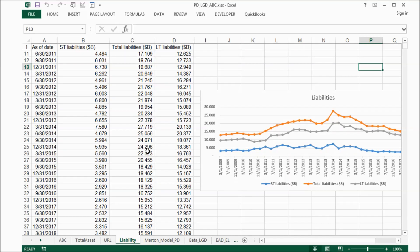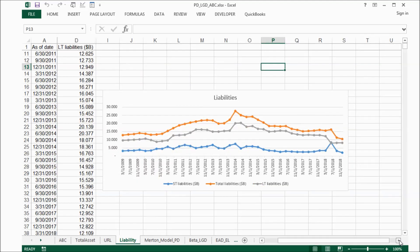For the liability of this company, I put short-term liability here and the long-term liability here. If we check the graph, you can see the liability also came up and then went down.